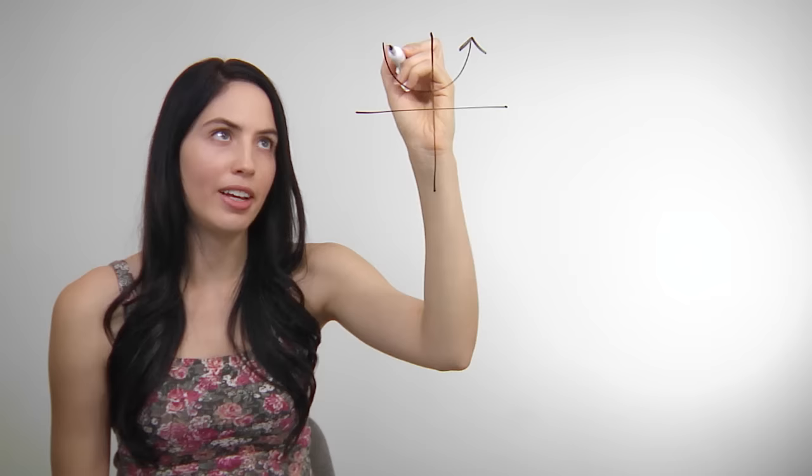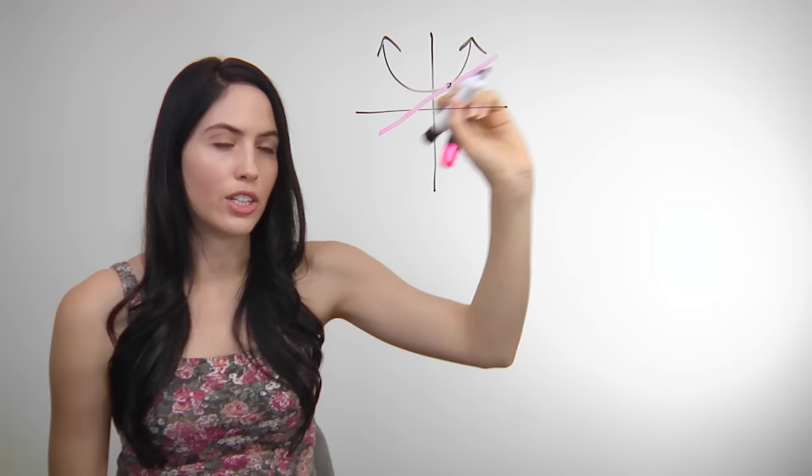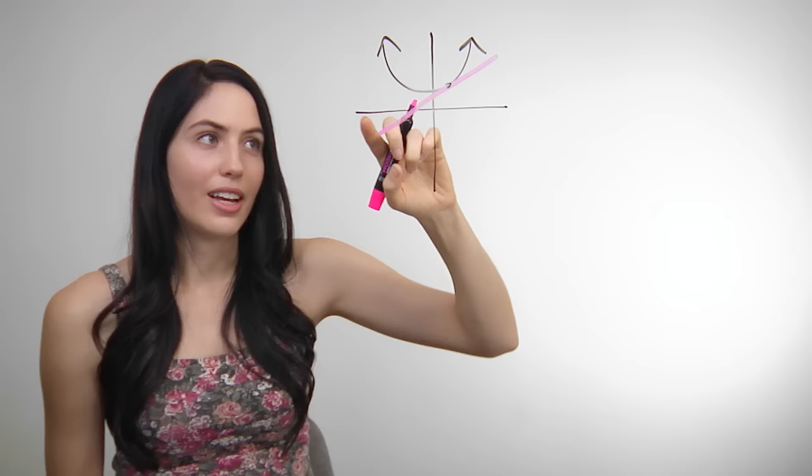What is a tangent line? Well, it just means if you have a graph with some curve on it, the tangent line is the line that touches your graph at one point exactly. It's a linear line that is tangent to your curve and sort of grazes it and touches at one point.